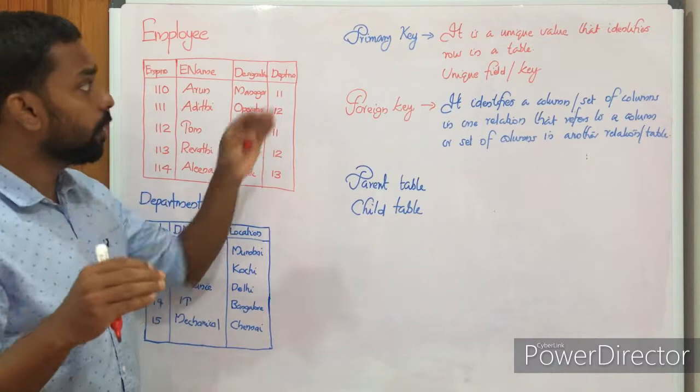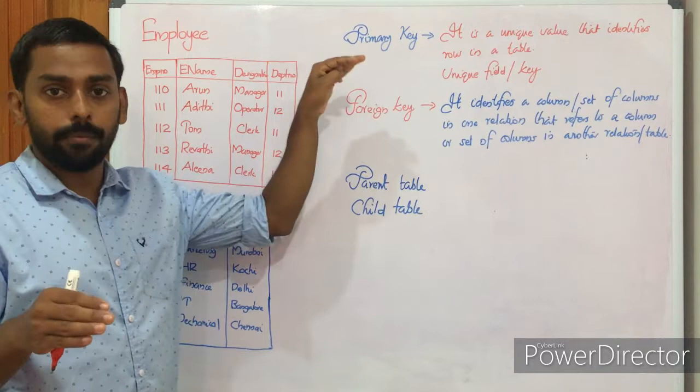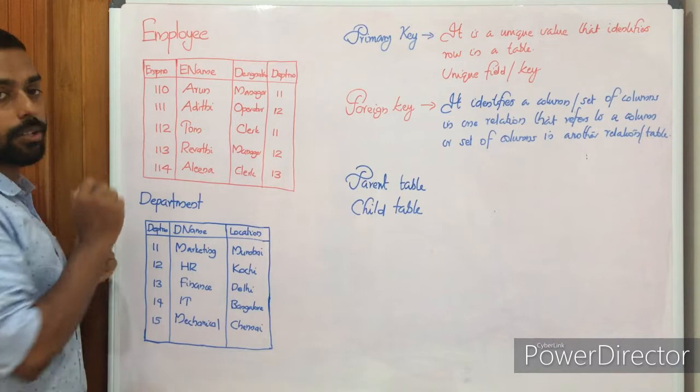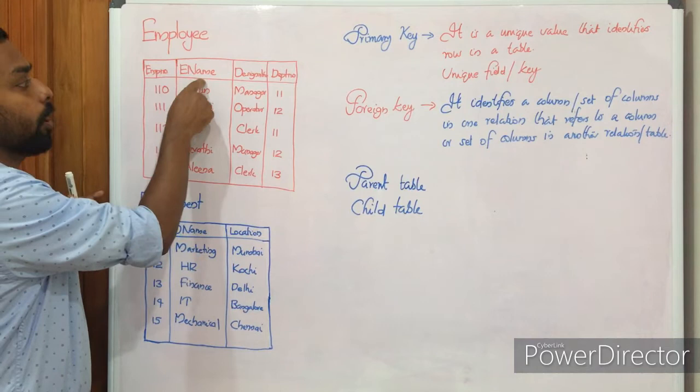Today we have primary key and foreign key. We have a number of keys — alternate key, primary key, foreign key, candidate key, super key — but we are looking at only primary key and foreign key. Here we have two tables: the first table is Employee, and the second table is Department. Employee has four columns: employee number, employee name, designation, and department number.